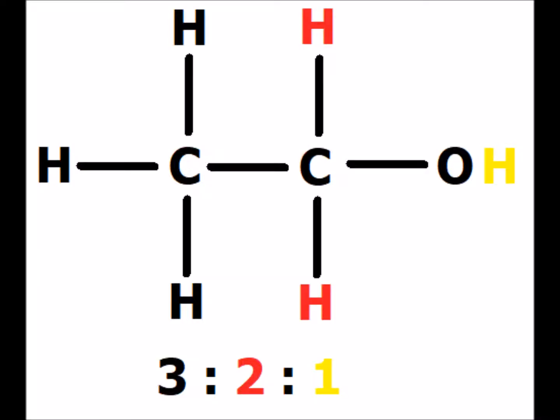In ethanol, we have three different types of hydrogen. The yellow hydrogen is the hydroxyl hydrogen, which we will find as a singlet because of exchange. There are two red hydrogens which are directly attached to the alpha carbon. These we expect to be shifted far downfield because of the effect of the very electronegative oxygen.